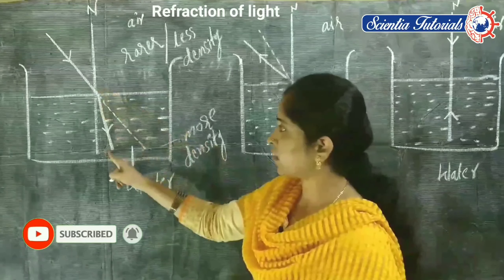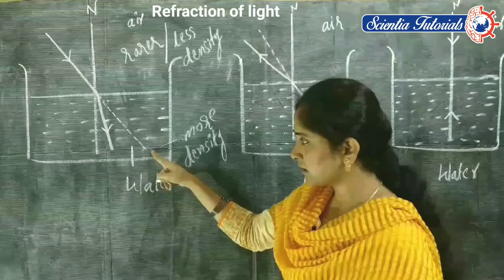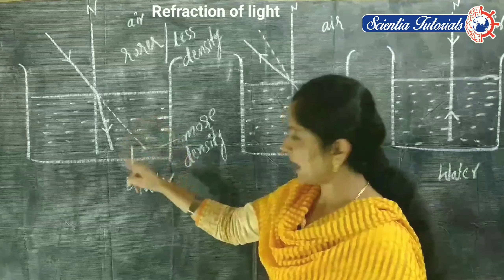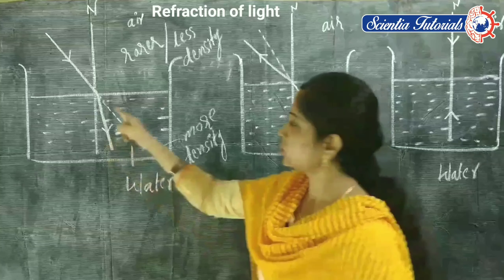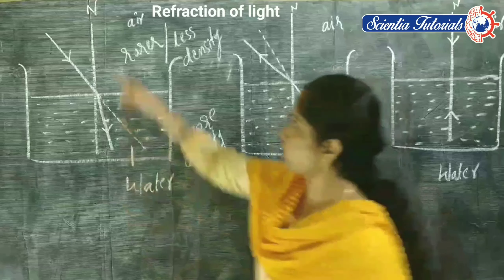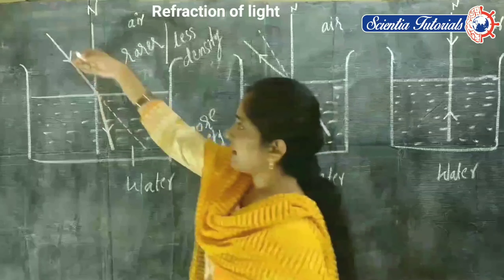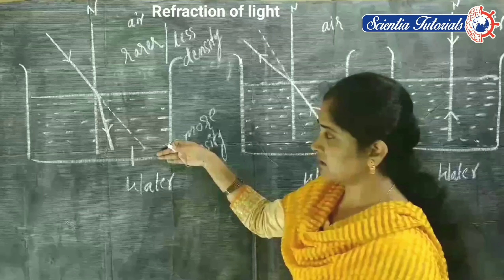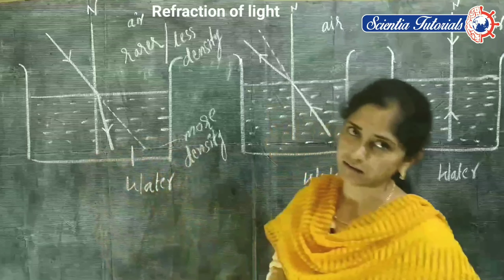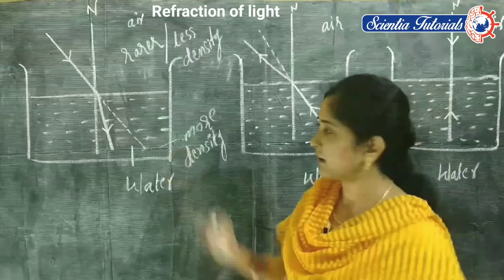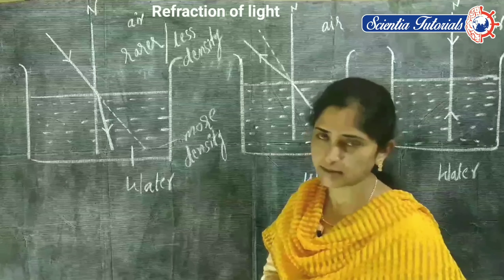Light has to travel in this straight direction, but due to changing of its speed and densities it is bending towards the normal. This perpendicular line is called the normal. So light is not traveling in the straight direction; instead it is bending towards the normal. We observe this characteristic of light in this situation.